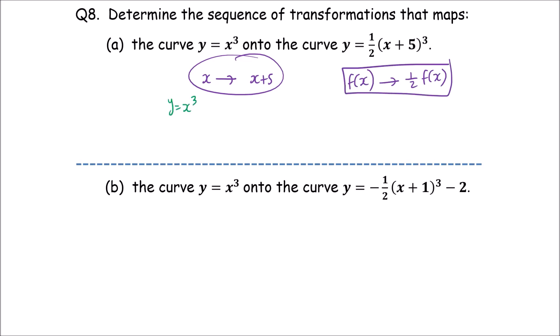We take y equals x cubed. Replacing x with x+5 gives (x+5) cubed. That transformation is a translation. A translation with translation vector negative 5, 0 — that is, 5 units to the left.